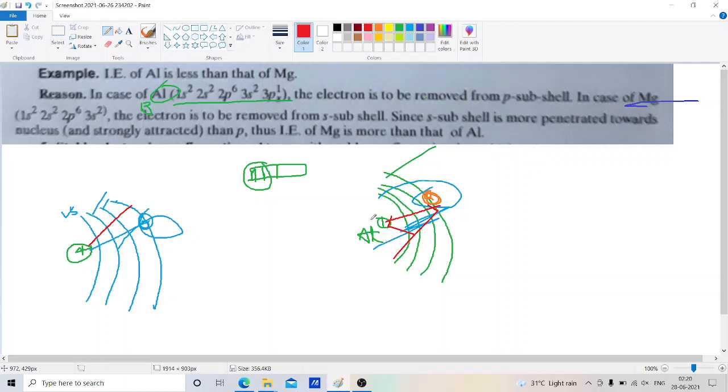As the distance is less in s orbital, the force of attraction will be more. If the force of attraction is more, then more energy is required to remove an electron. In aluminum, since 3p is at a greater distance compared to 3s in magnesium, the force of attraction will be less and it will take less energy.